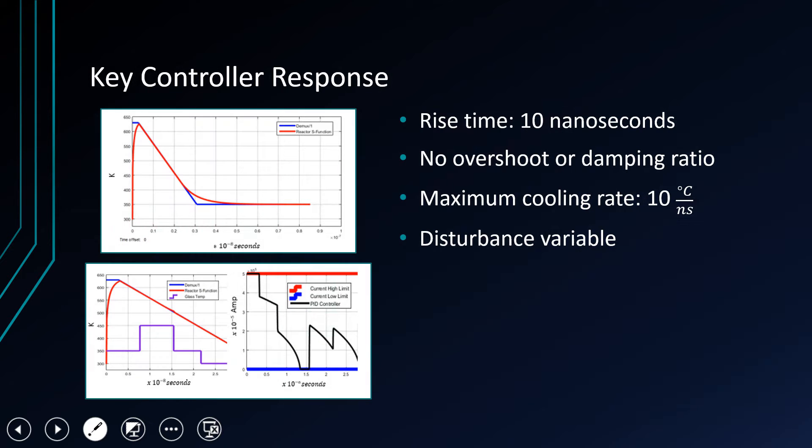The key control response we're looking for is this shape on the top graph. We want very fast rise time with no overshoot and no damping ratio. As soon as we reach that 10 nanosecond mark, we want it to cool at 10 degrees per nanosecond. Once it gets to a certain point, it can cool slower than that, which is what you see in this region. It gets cool enough that the current is no longer applied and it's just purely conduction related, taking a little bit of time to reach that ambient temperature.